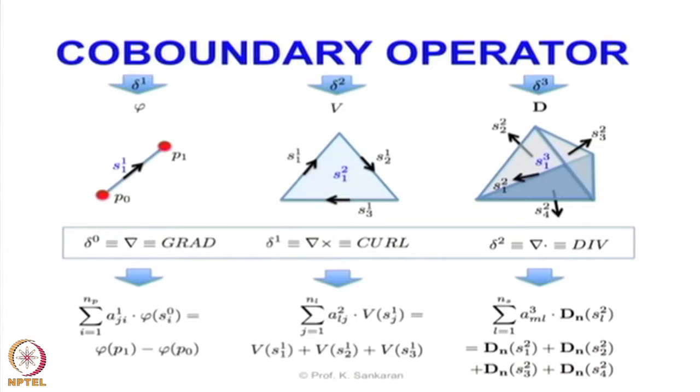We explained the parallel connections existing between co-boundary operators operating on different co-chains and the vector calculus operators, namely divergence, curl, and gradient. These relationships are the most important connections for modeling physical problems using algebraic topology without the need for vector calculus.